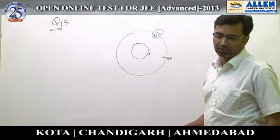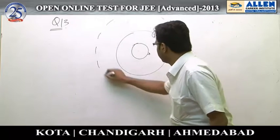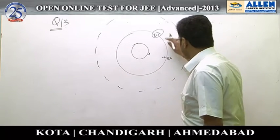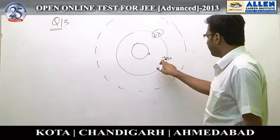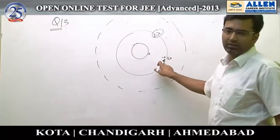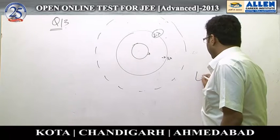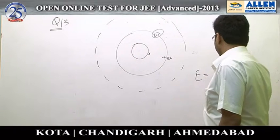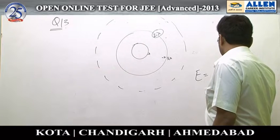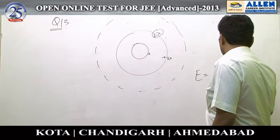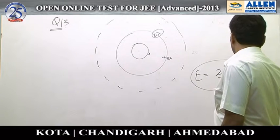Applying Gauss's law suitably at an external point, the field shall only be because of 3 lambda, because these two would contribute a zero field outside. And that field happens to be 2k times 3 lambda by r, radially outwards.